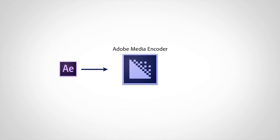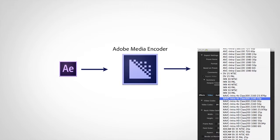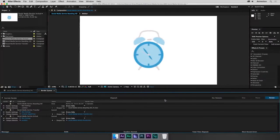Adobe Media Encoder functions as a background renderer for After Effects and supports far more formats than After Effects ever did. Let's see how Media Encoder integrates with Adobe After Effects.